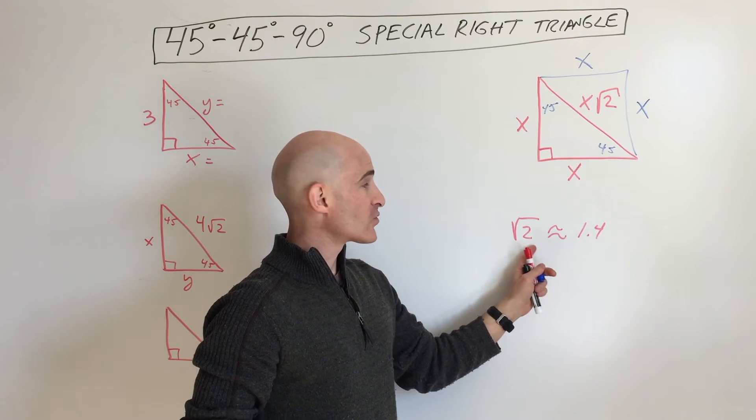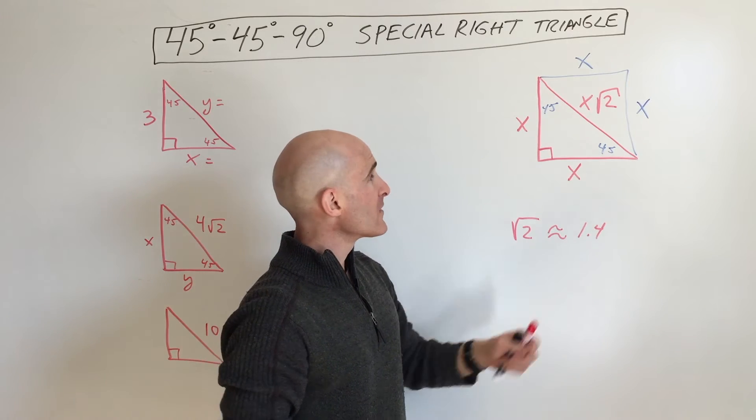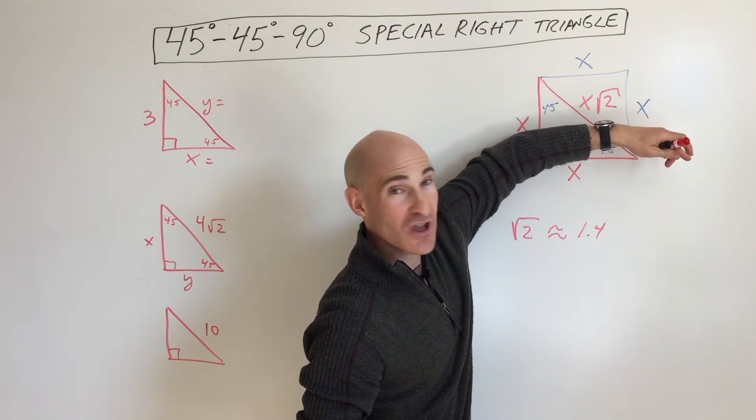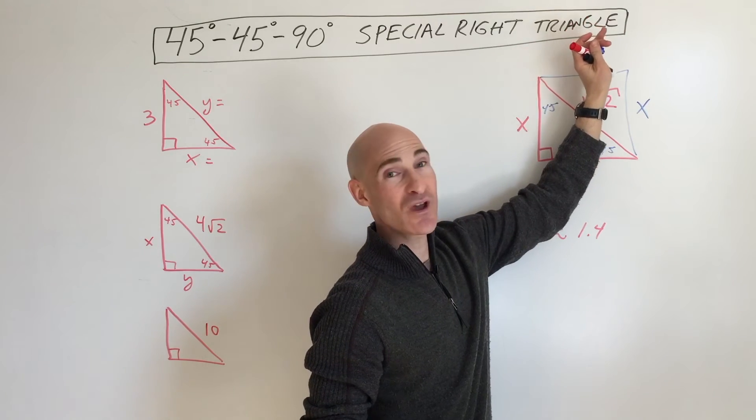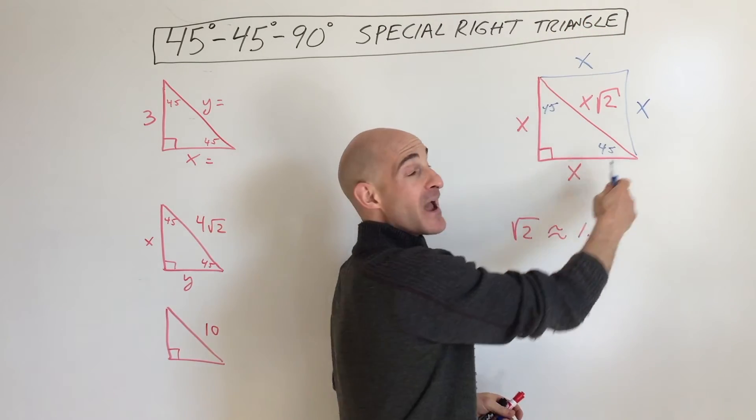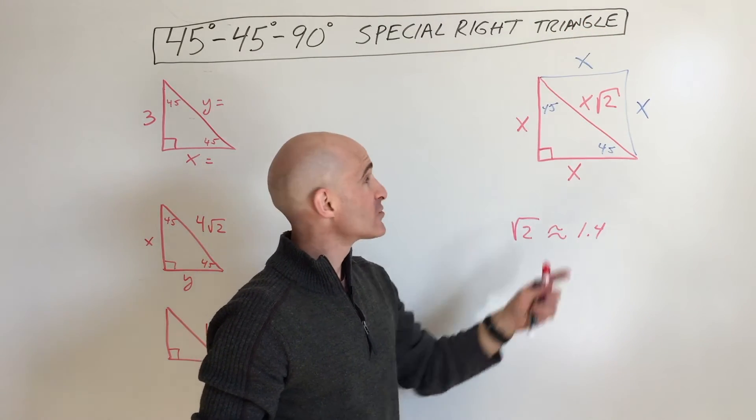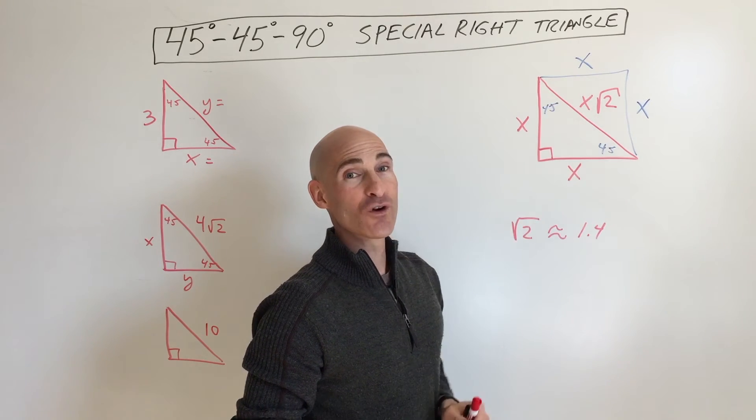And just for reference, square root of 2 is about 1.4. So it's just like when you try to put something in a box. If you try to put it this way, it doesn't fit. If you try to put it this way, it doesn't fit. If you put it on the diagonal, though, oftentimes it'll fit because this is actually 1.4 times longer.